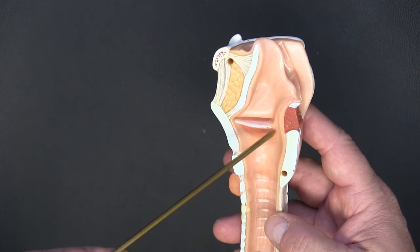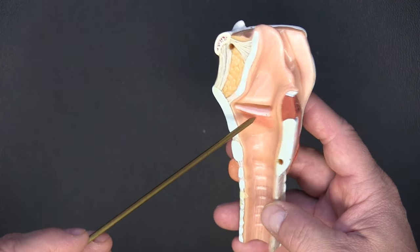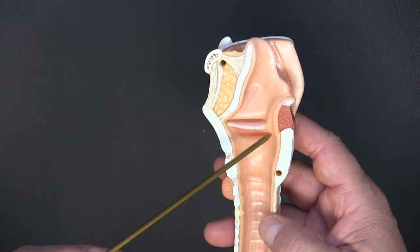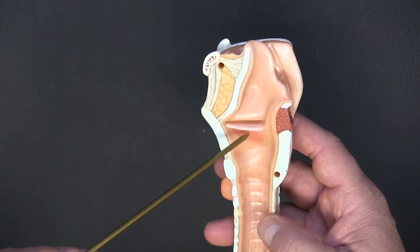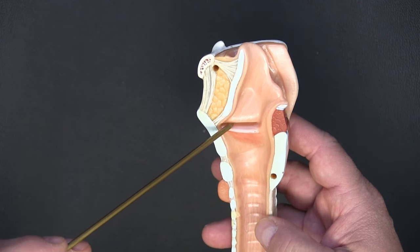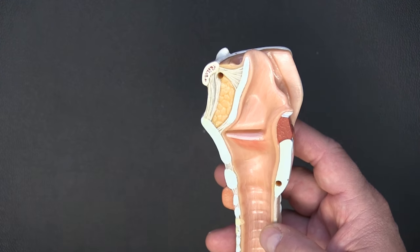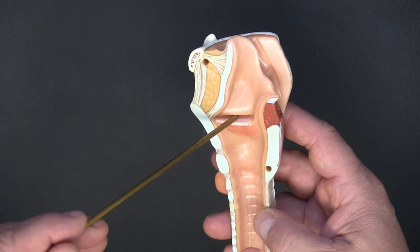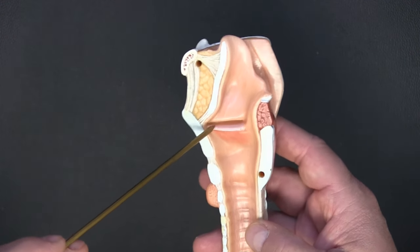As it moves, tenses, relaxes, abducts, adducts, all done by the muscles of the larynx, that's going to change the tone and volume of our voice. The fold above it, superior to it, is called the false vocal fold, and that is going to be immobile. It doesn't really move that much, and between the two is a space called the ventricle.